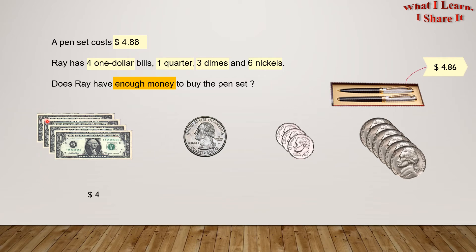So his one, two, three, four $1 bills equals $4. His one quarter equals $0.25. One dime is equal to $0.10. So three dimes equals three times 10 equals $0.30. And he has six nickels. So if each nickel equals $0.05, then six nickels will equal to six times five equals $0.30.